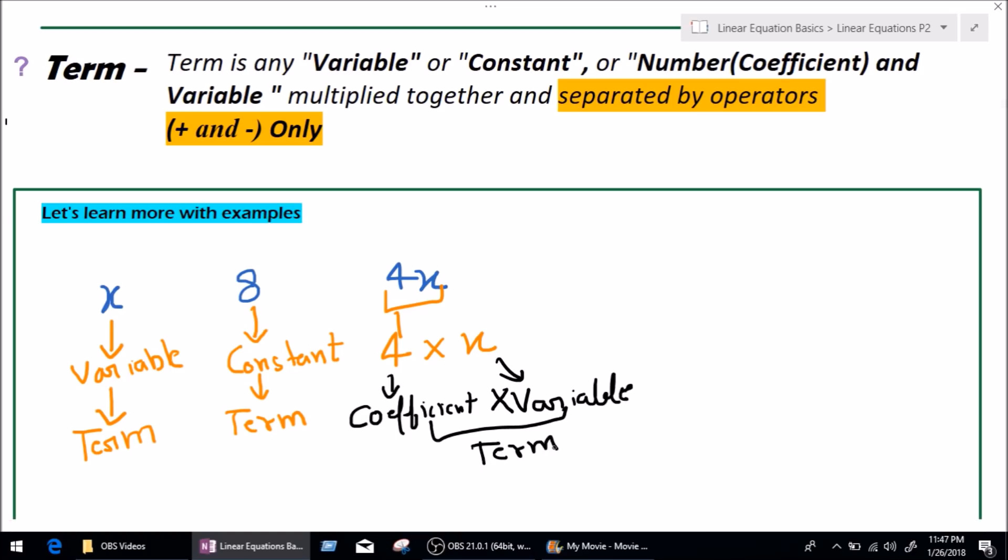What is a term? Any variable, constant or coefficient and variable multiplied together is called a term. That's simple. Now, I want to say 4x. We all know that 4x is a term. Now, let's talk about this phrase separated by operations plus and minus only. What does this line mean?